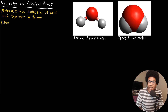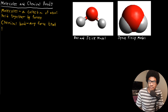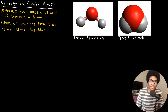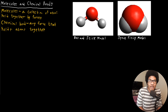Those forces are called chemical bonds. A chemical bond is just any force that holds atoms together. You can think of these as the glue that holds everything together. You have a collection of atoms that form a molecule, and those chemical bonds are what hold them in place, what hold them together as a collection.